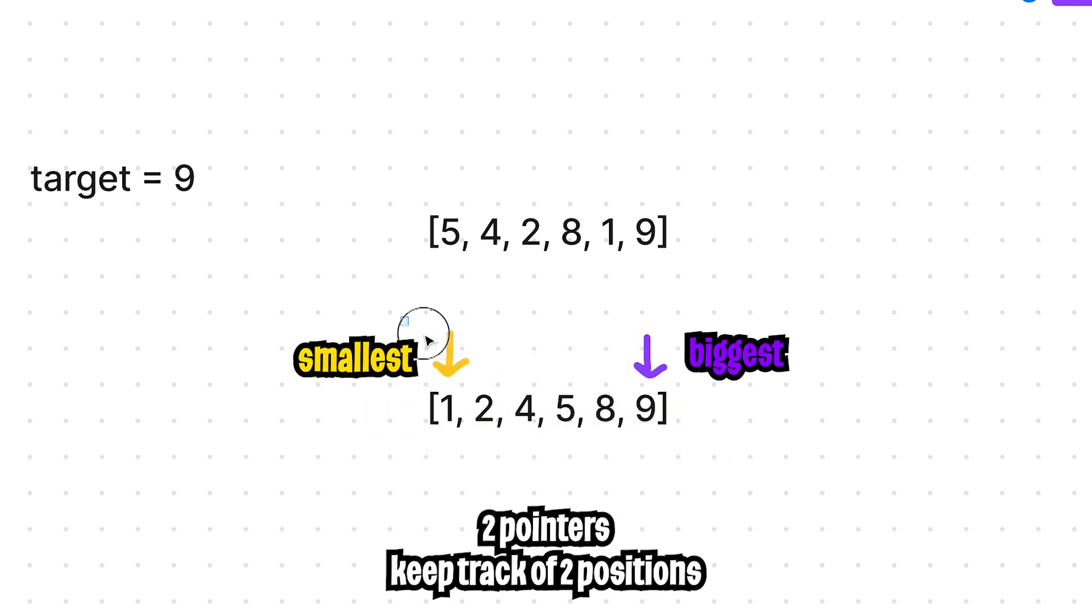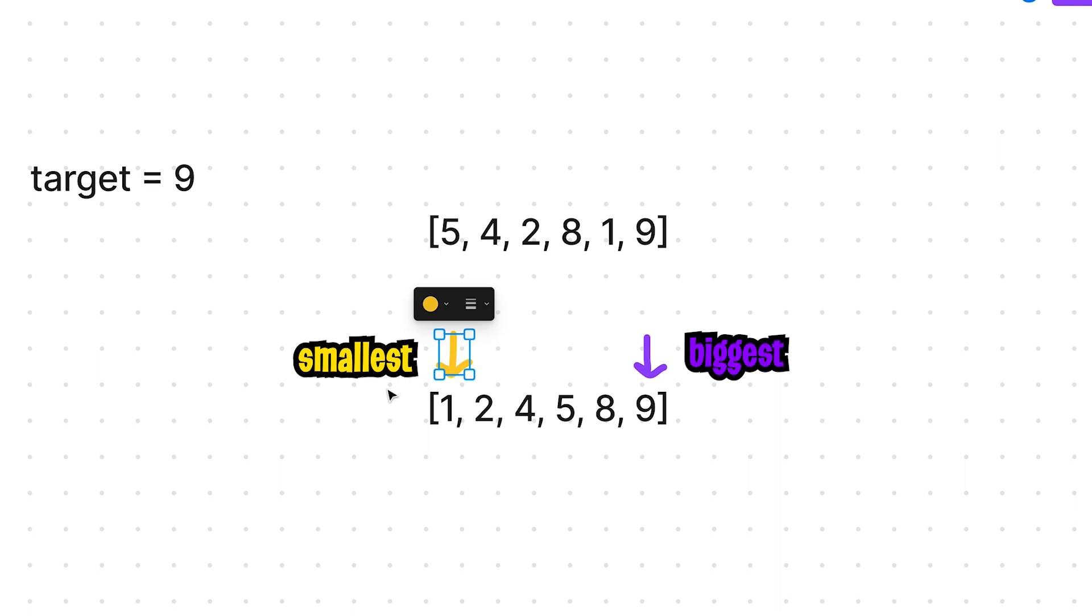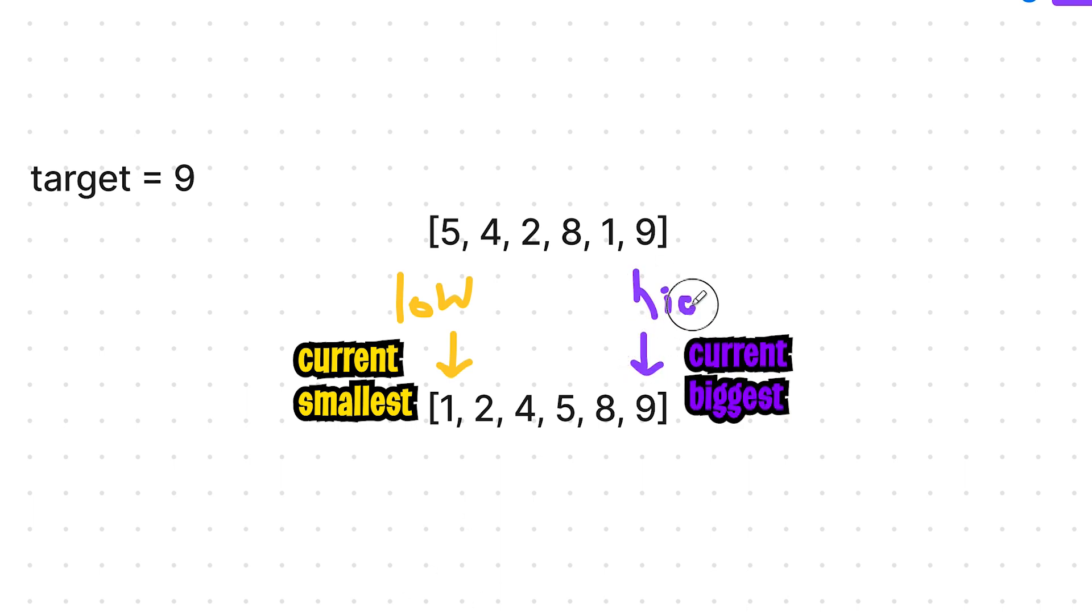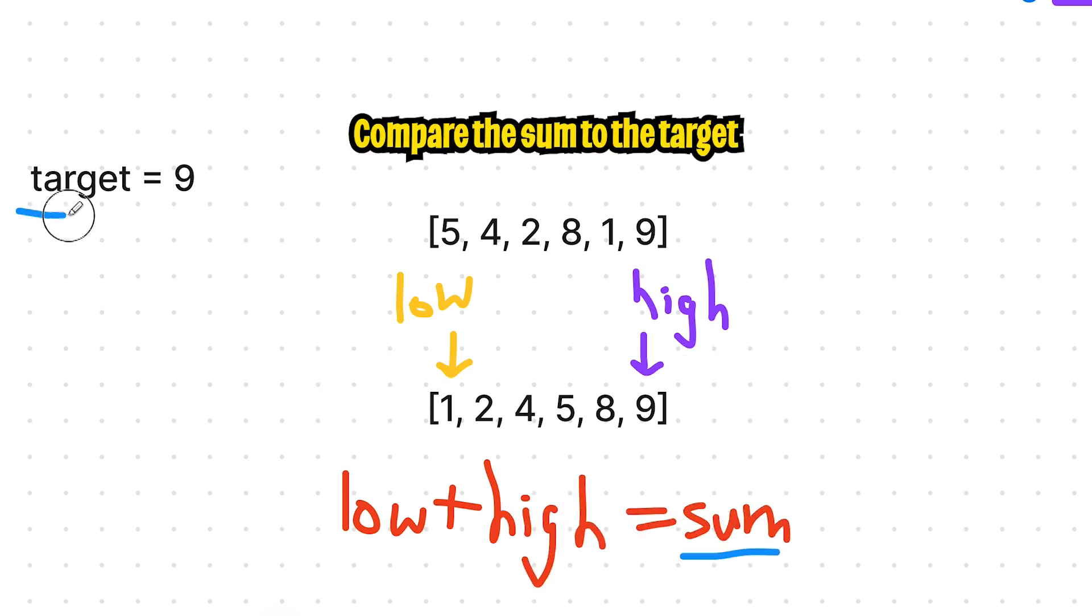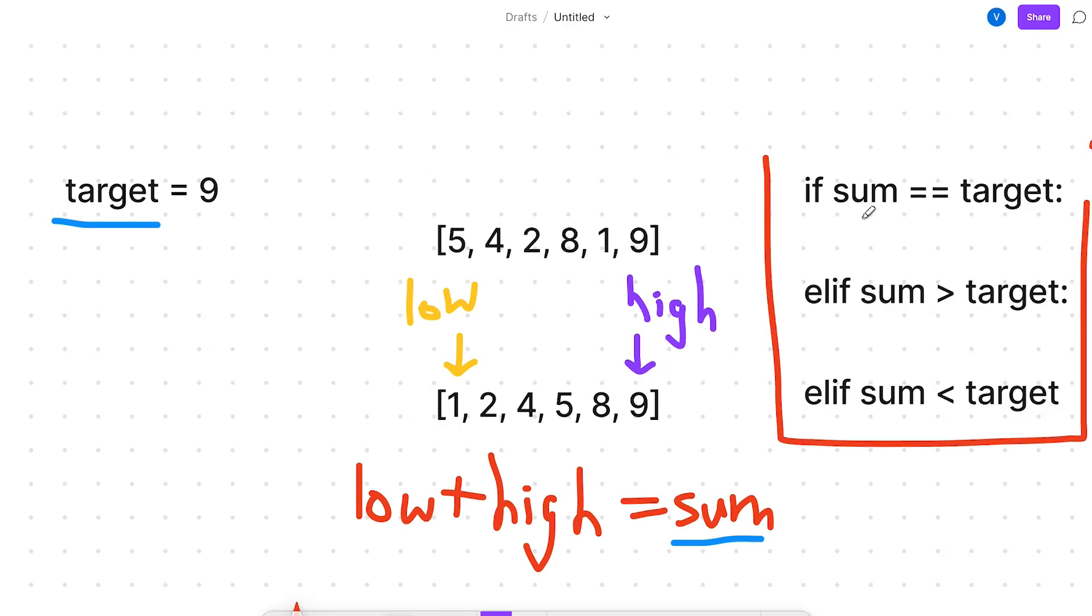So this left arrow here keeps track of the current smallest value. So we can just call this the low. And then this purple arrow here keeps track of the current biggest number. So we can call this the high. And all we're doing in this algorithm is we're taking the low and we're adding it to the high, which will give us a sum value. And now we can take the sum value and compare it with the target. And now we have three different scenarios to consider.